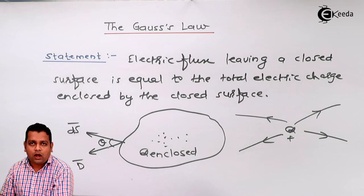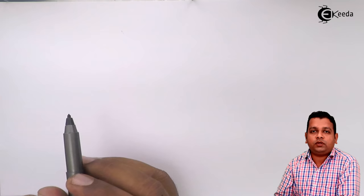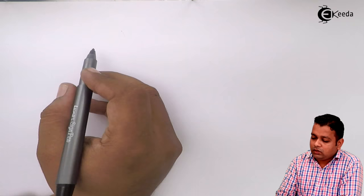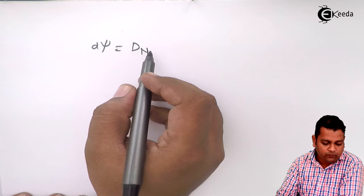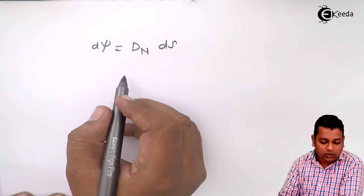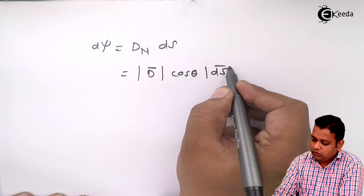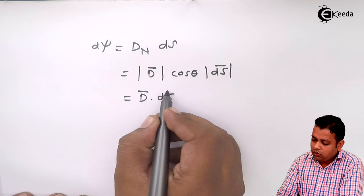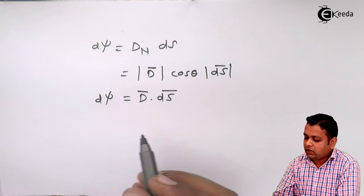Here we consider theta, and for this situation only the normal component of electric flux density is outward from the region. The differential amount of electric flux we can represent by dψ. So dψ is given by D_N — representing the normal component — into differential surface area ds, which we can further represent as the magnitude of D̄ for the normal component, cosine theta, and the magnitude of the surface area. So here we can write it is nothing but D̄ dot ds̄. The flux and the charge both have the same unit — that is why it is in terms of Coulombs.